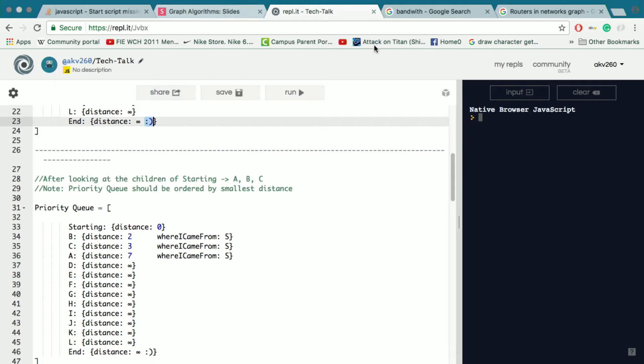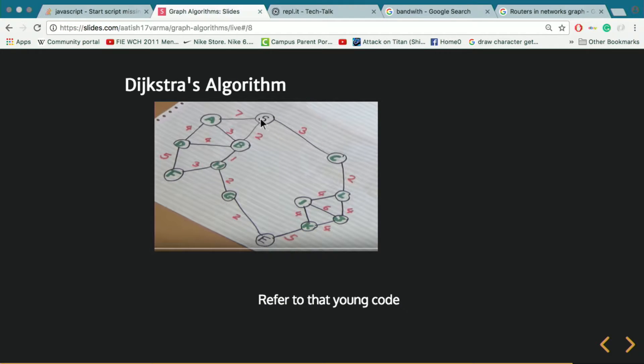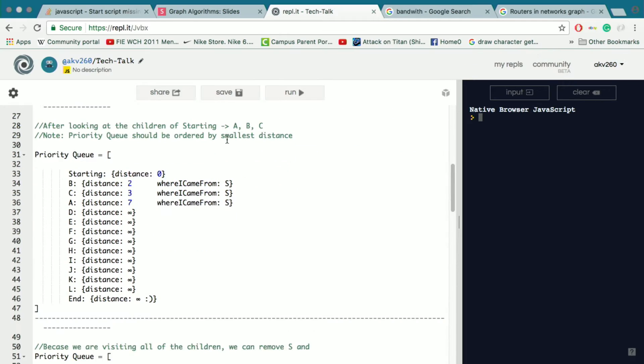So if we start here, and if this is our starting point, we want to evaluate that starting node's children. So that's A, B, and C. So A has a distance of 7 from the starting node, B has a distance of 2 from the starting node, and C has a distance of 3 from the starting node.